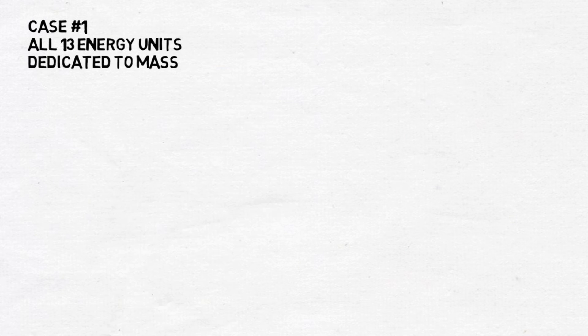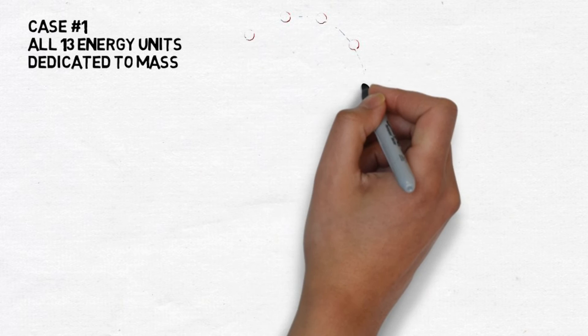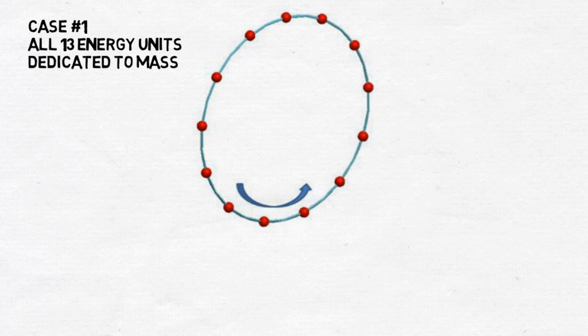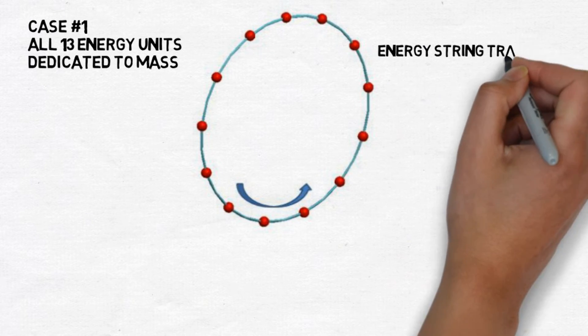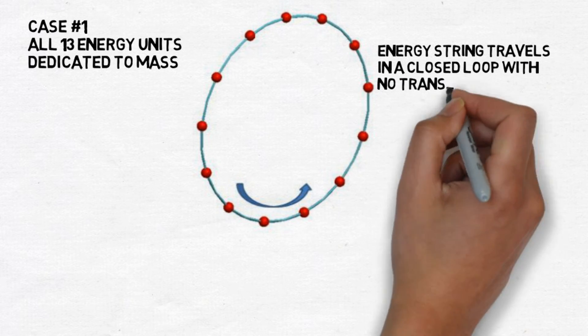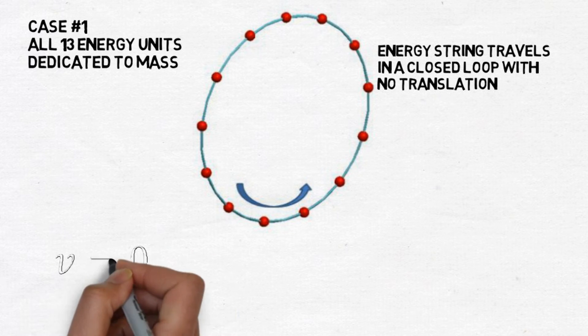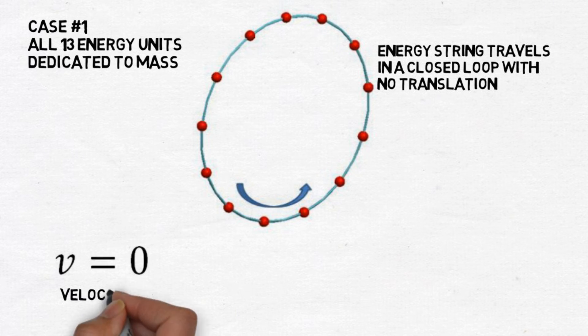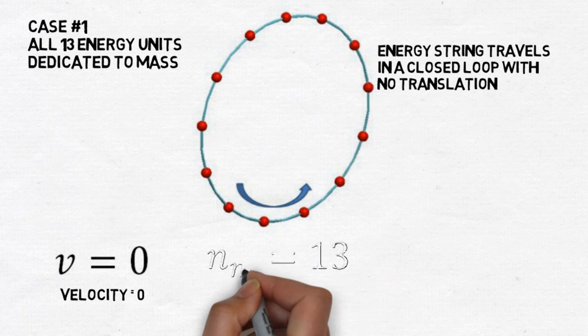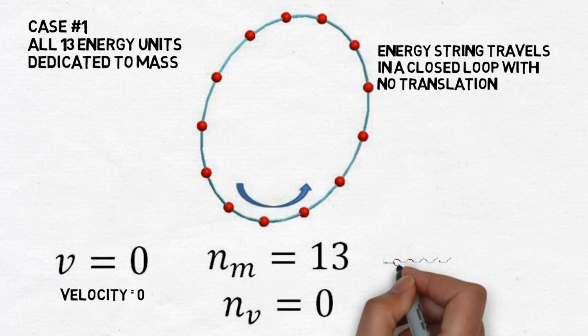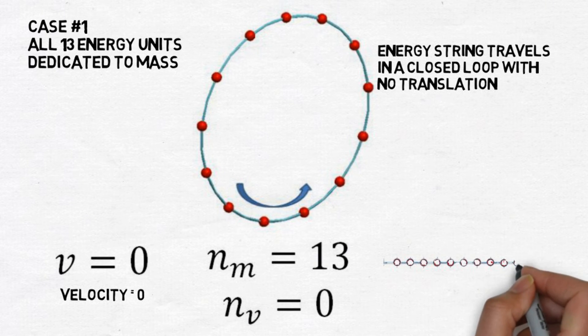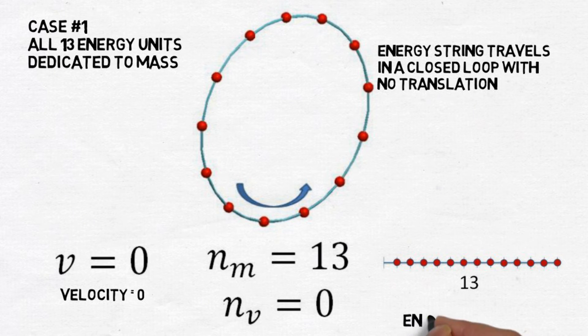Now let's look at four cases that demonstrate how we can use our new quantized energy triangle to understand how energy forms matter in motion. We will use 13 energy units because the number 13 can form a Pythagorean triple, where all sides of the right triangle are integers. So let's look at case number 1, where all 13 energy units are dedicated to mass, or nm equals 13 and nv equals 0. In this case, the energy string travels at light speed in a closed loop with no net translation.